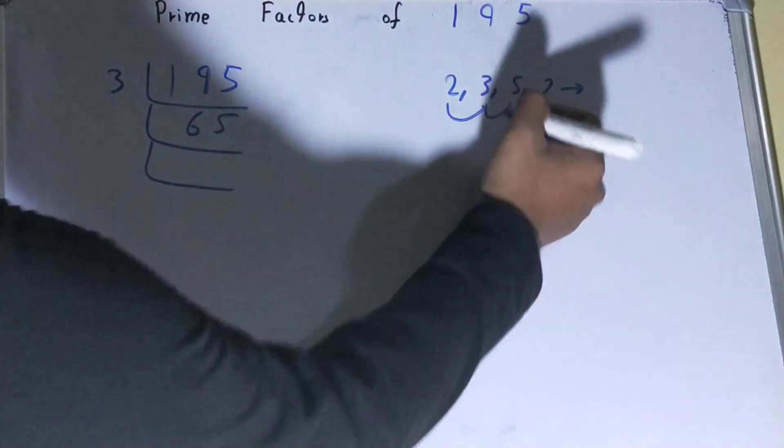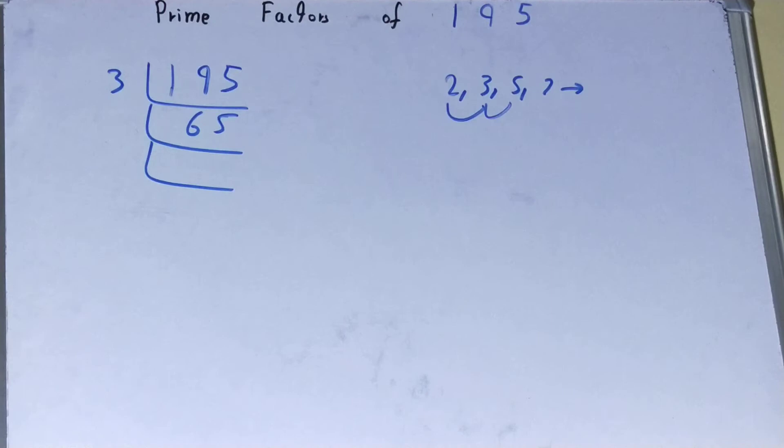So we need to go to the next lowest prime number, that is five. Is this 65 divisible by five?